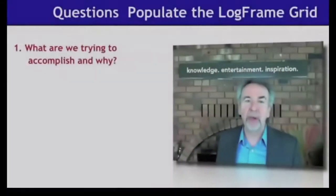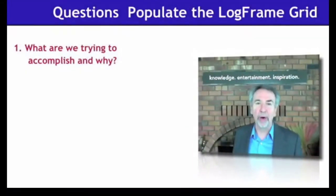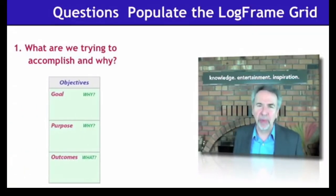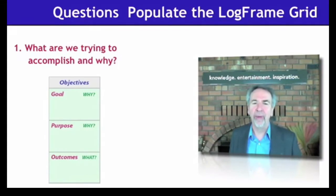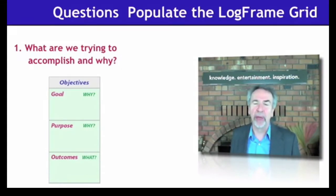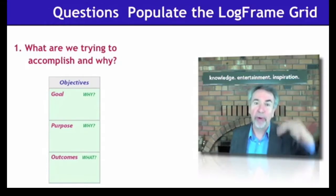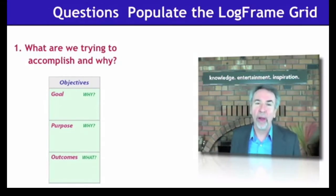The first question we'll ask is: what are we trying to accomplish and why? We're trying to accomplish objectives, and we will arrange those objectives into a hierarchy of outcomes — specific deliverables — and if outcomes, then purpose, a higher-level objective. If purpose, then goal, because every project has multiple objectives.